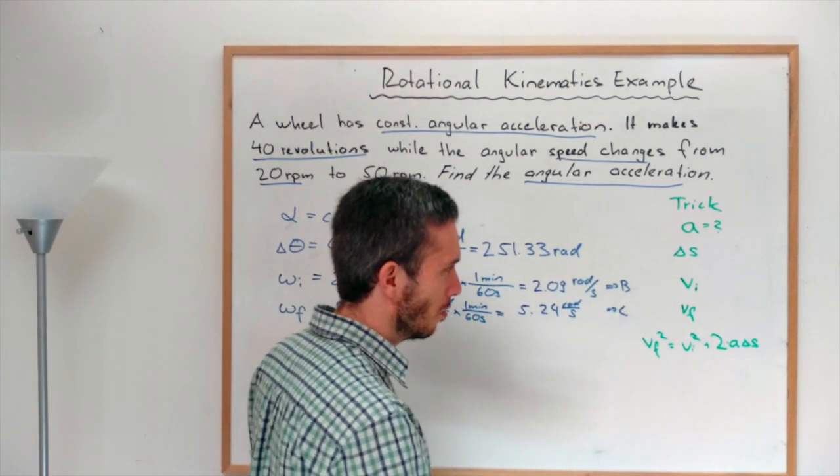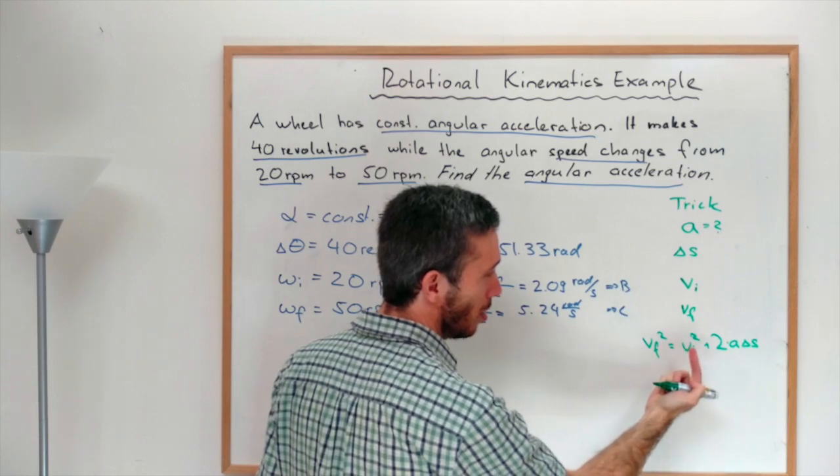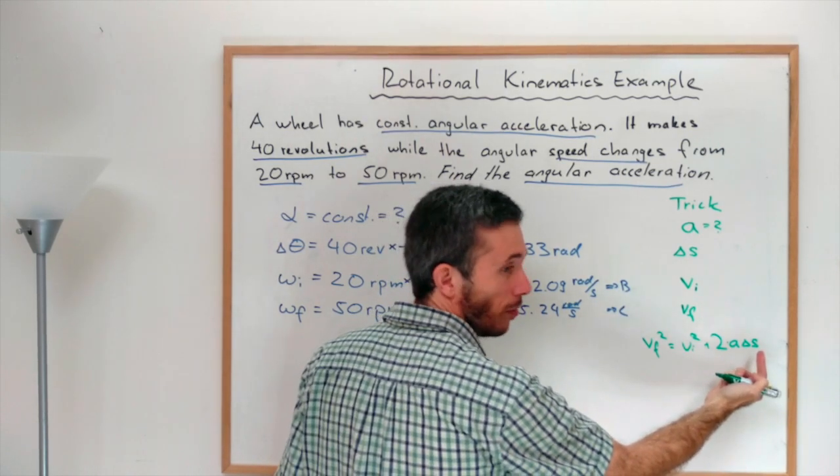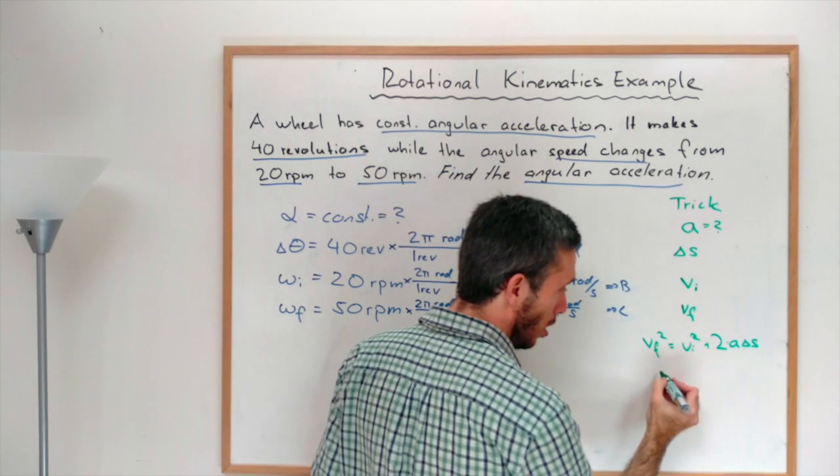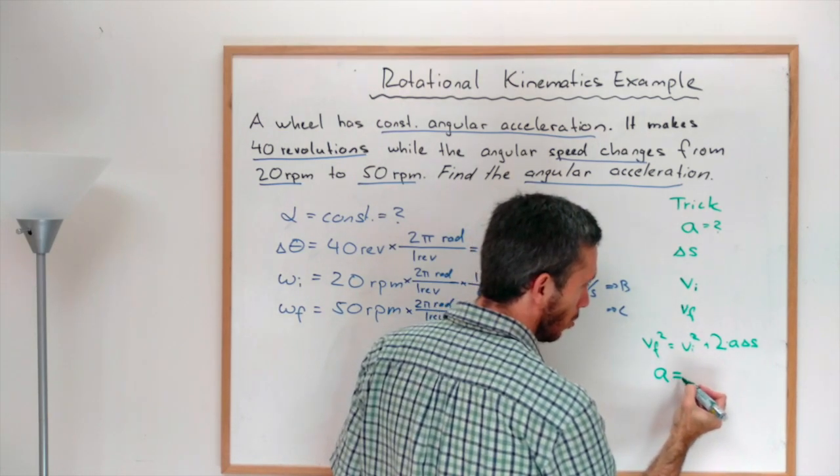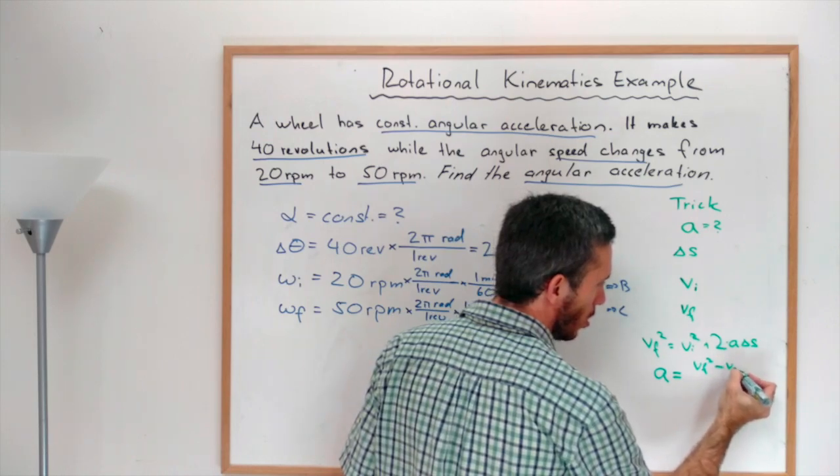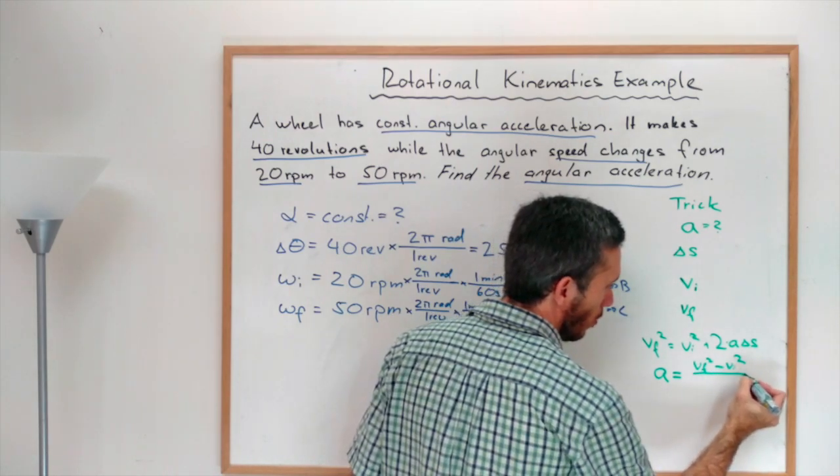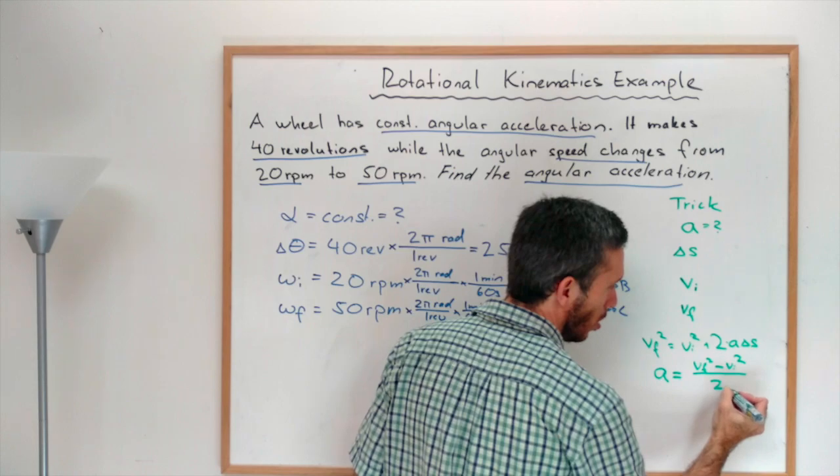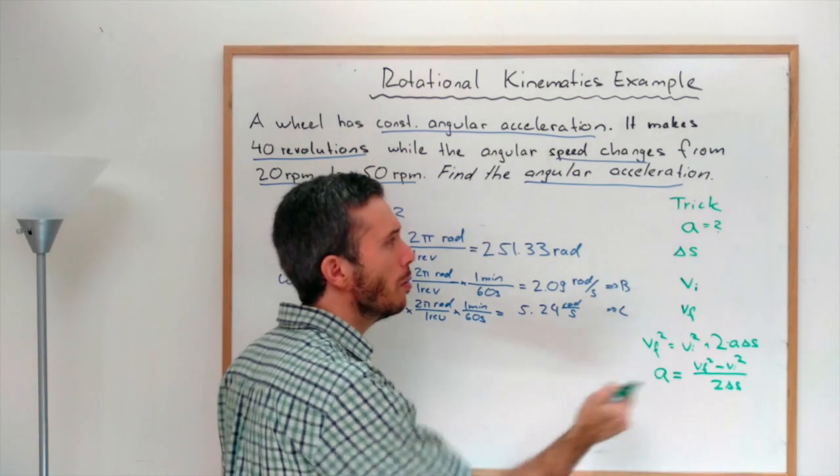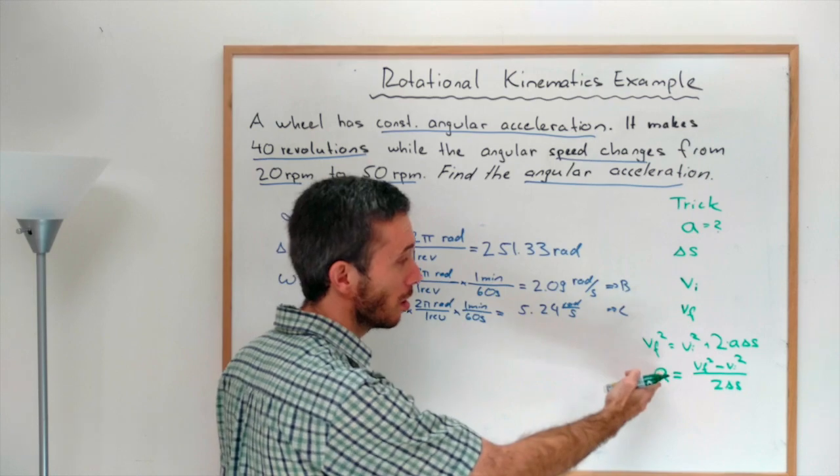Which is perfect, right? Because we have the final velocity, initial velocity, and we have displacement. We look for the acceleration. So the acceleration is equal to V final squared minus V initial squared divided by 2 delta S. So this is what we would have gotten in the linear case.